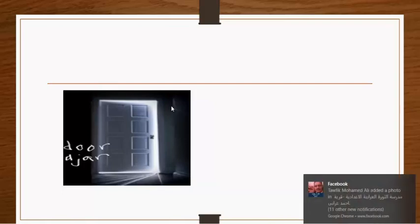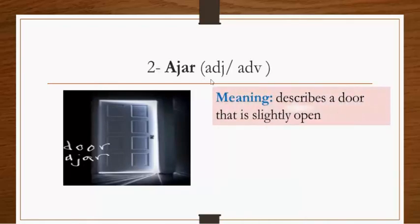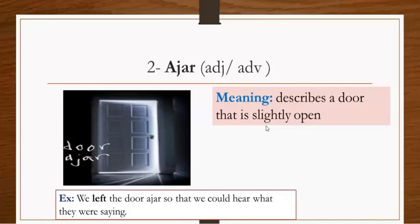If you look at the door, you're going to find that it's not completely closed, just a little bit open. This is the word ajar. Ajar is an adjective or adverb meaning describes a door that is slightly open. The antonym is closed tightly. Example: We left the door ajar so that we could hear what they were saying. They're spying on them. Ajar means slightly open.